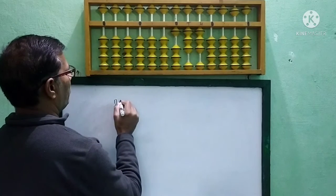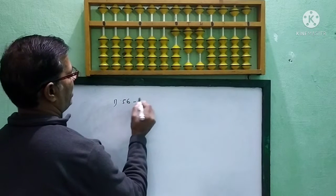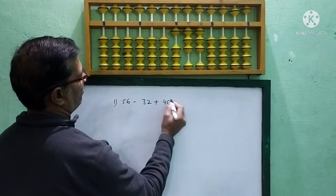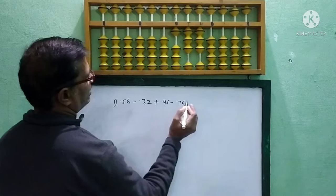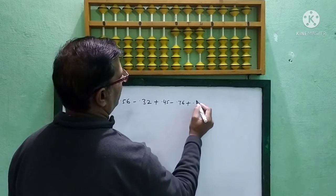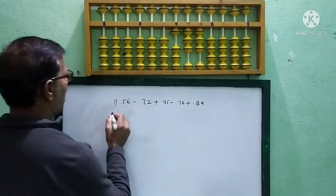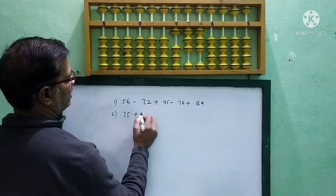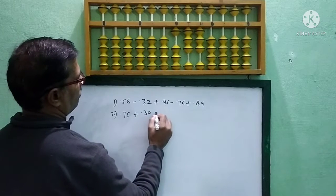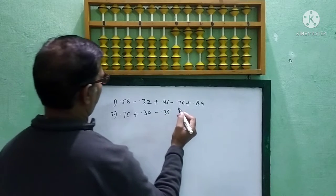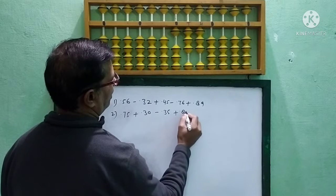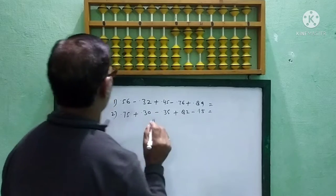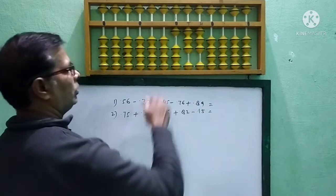Decimal means 0.56 minus 0.32 plus 0.45 minus 0.76 plus 0.89. And now, second question: 0.75 plus 0.30 minus 0.35 plus 0.82 minus 0.15. First of all, we will start the first question. Now, look here.